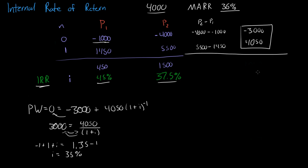The internal rate of return is 35% for this incremental investment. We get $1,050 in return, or we gain $1,050.